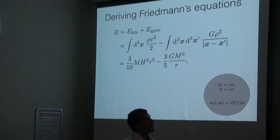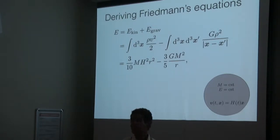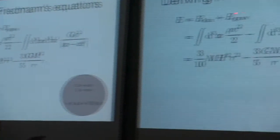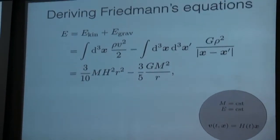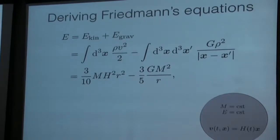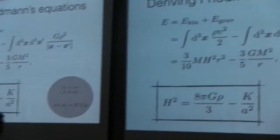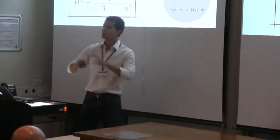We can then write the conservation of total energy, which is just the sum of a kinetic term and a gravitational term. When I plug the velocity expression into the kinetic energy, I get a term that depends on the Hubble constant. When I calculate the gravitational potential energy of this sphere, I get this result. And as you can see, if you shuffle the terms a bit, you recover the well-known Friedmann equation — the constraint part. The K here comes from the total energy. In the Newtonian interpretation, what we call spatial curvature in relativistic cosmology is just related to the total energy of the system.